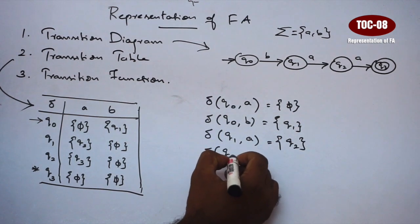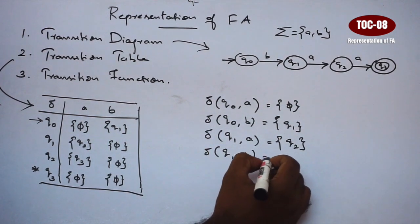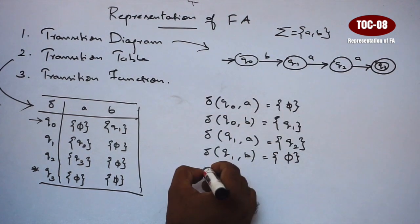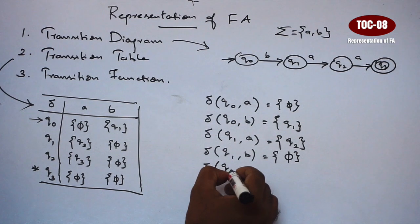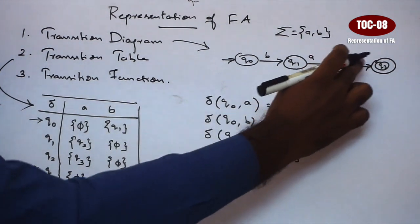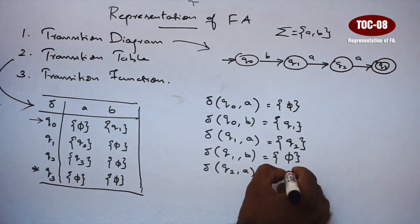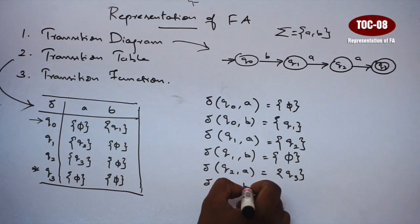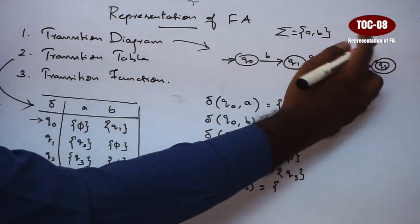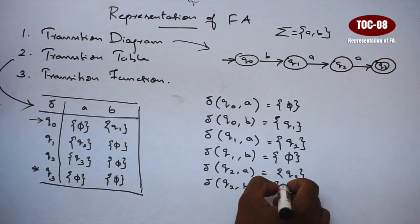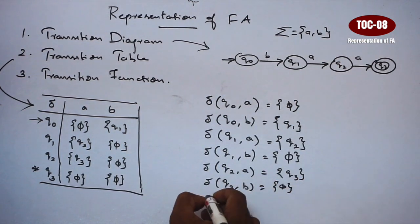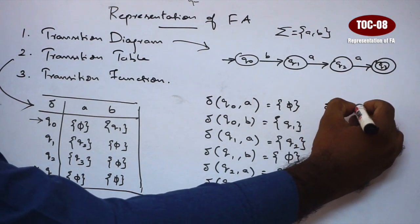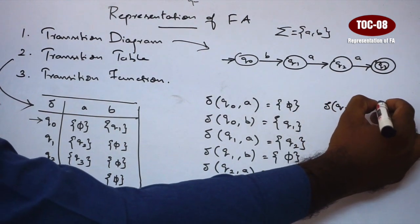Next, transition of Q1 on B is null. Next, transition of Q2 on A goes to Q3. Next, transition of Q2 on B is null. Next, transition of Q3 on A equals null.